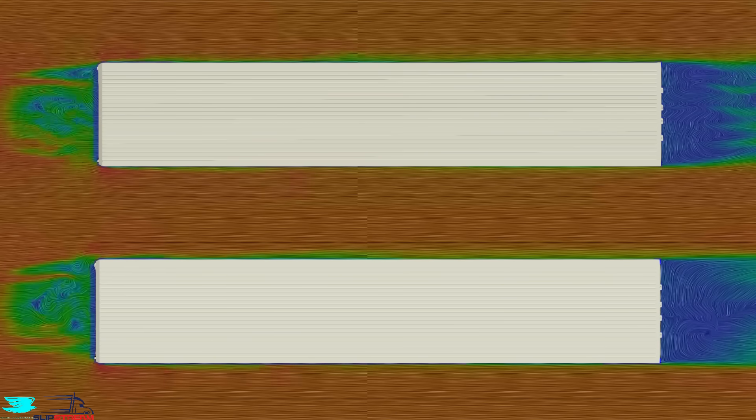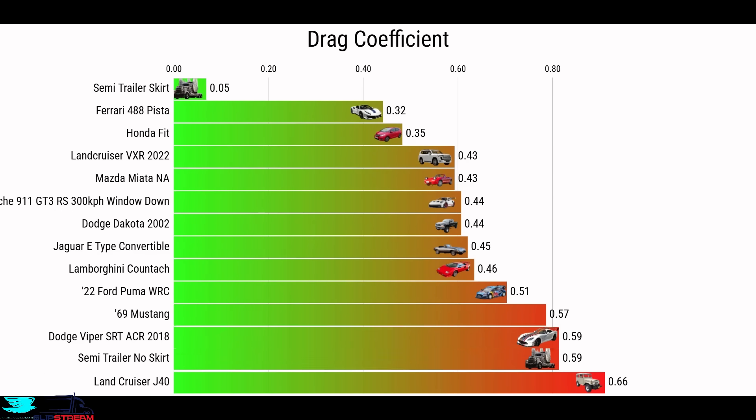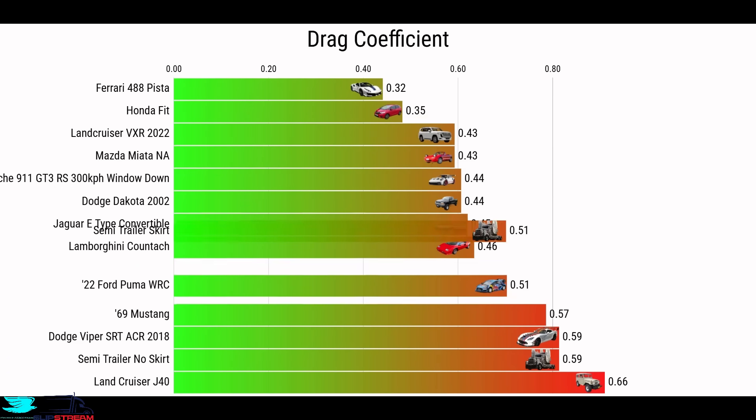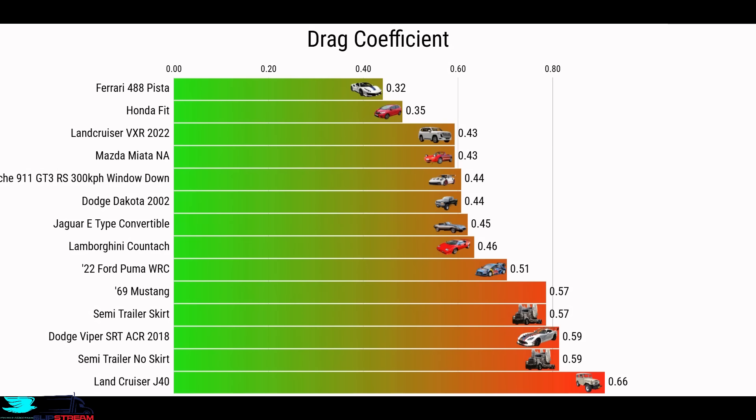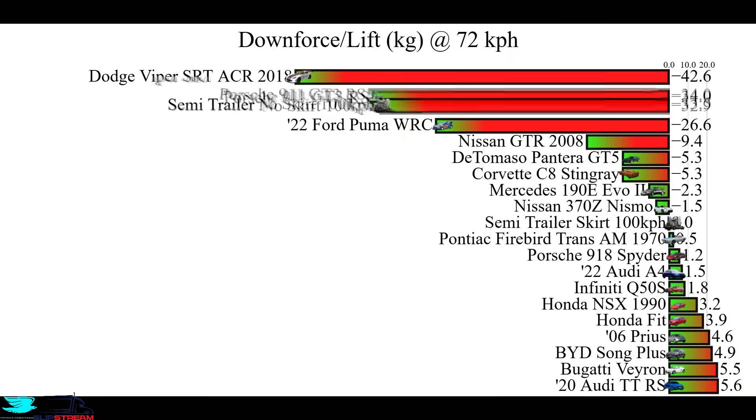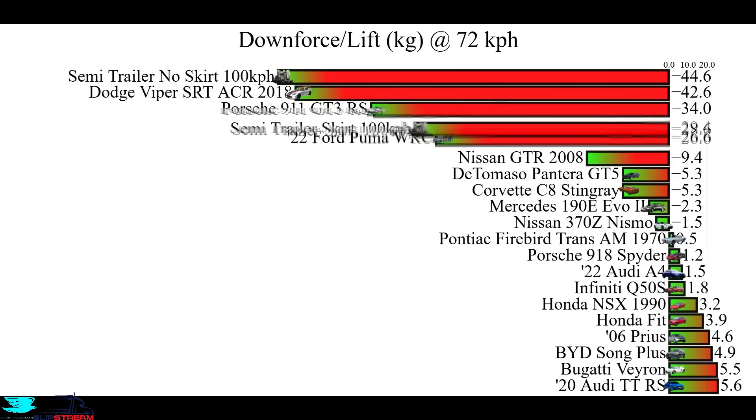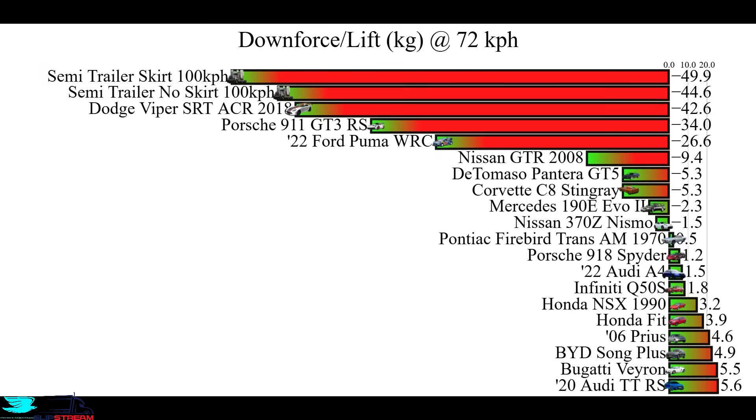So how did the skirts affect the drag coefficient? Well, without the skirts, it came in at 0.591, which is very good for a truck. With the skirts, that number dropped to 0.566. For the lift, which doesn't really matter, but I was curious, without the skirts, this entire ensemble produces 44.6kg of downforce, which is better than almost any car we've tested. With the skirts, it produces even more downforce, 52.7kg, about as much as a large sandwich.